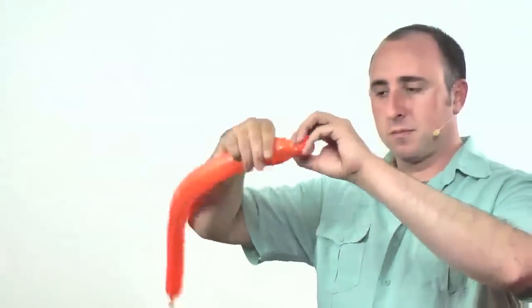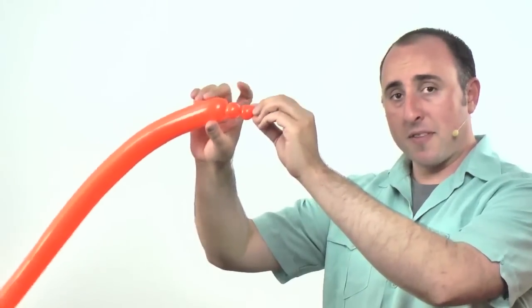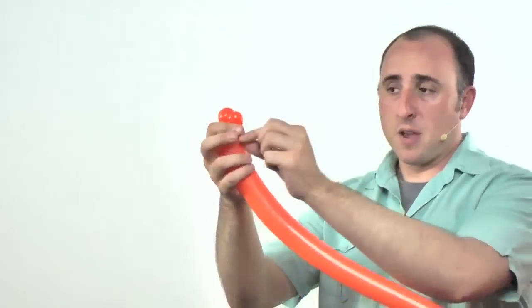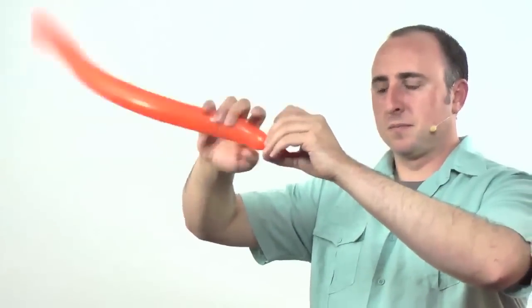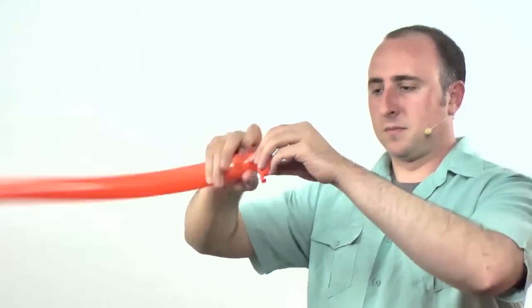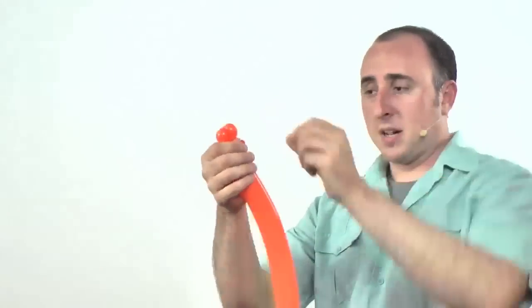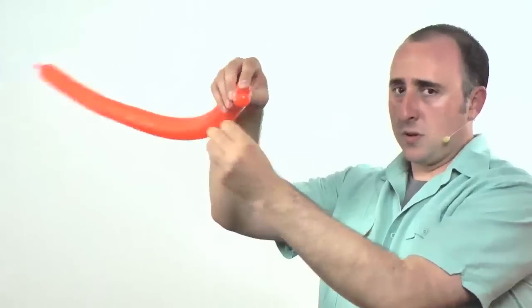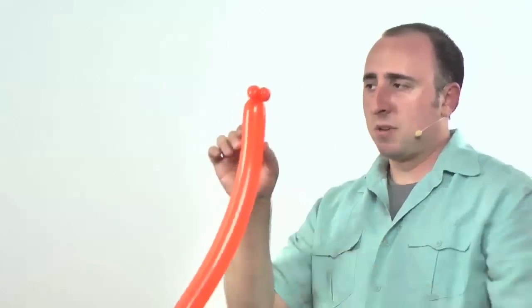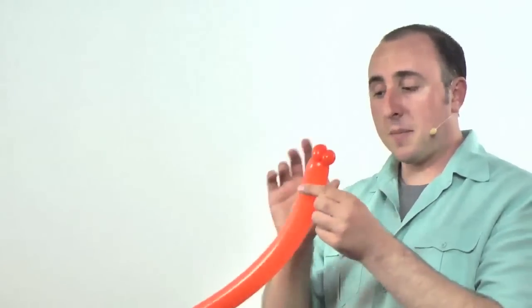We're going to start with the nose of the giraffe. Twist two small half-inch bubbles. They should be roughly about the same size. Now I'm going to hold those there, take the slack, and go around. I'm going to twist them a couple of times and then take the slack and feed it through the two right there. That way the tension of wrapping the extra slack around will keep those in place so they don't come undone.